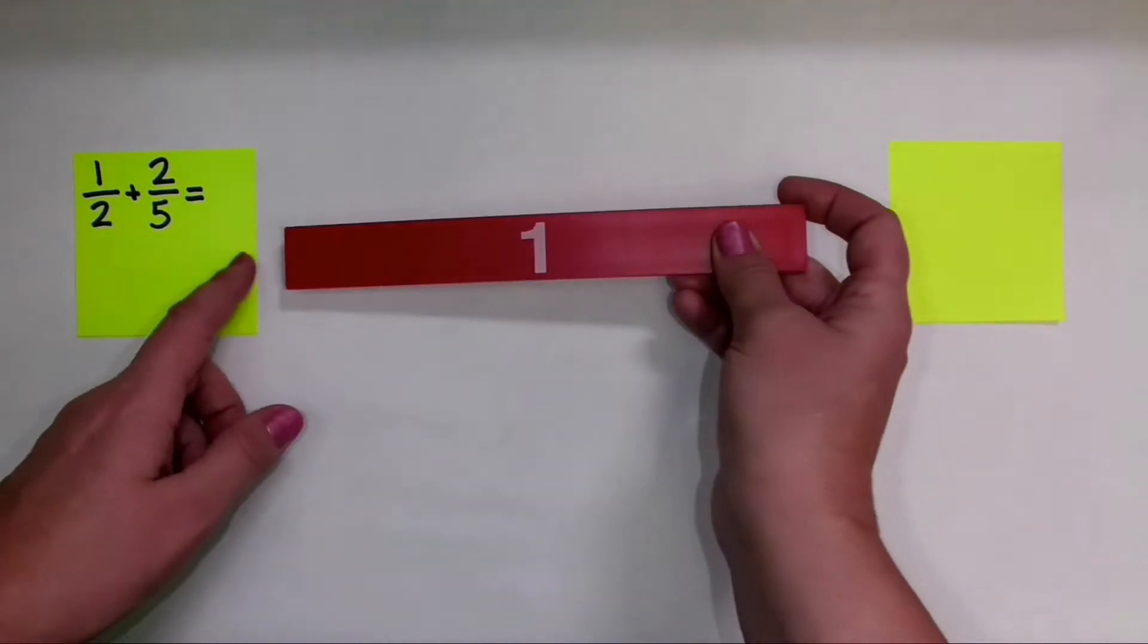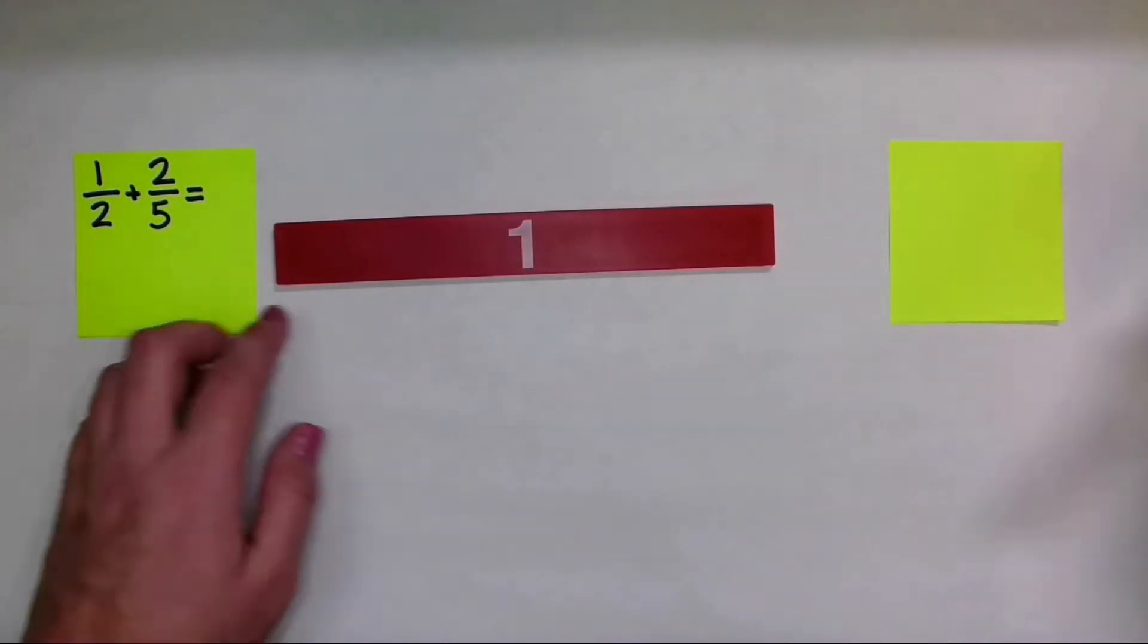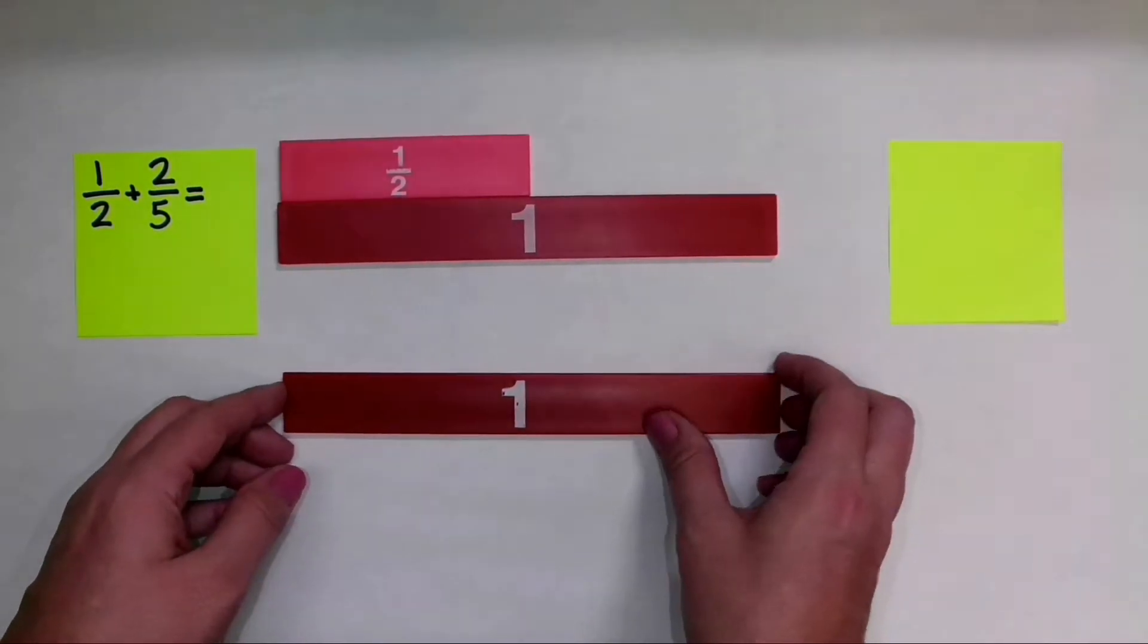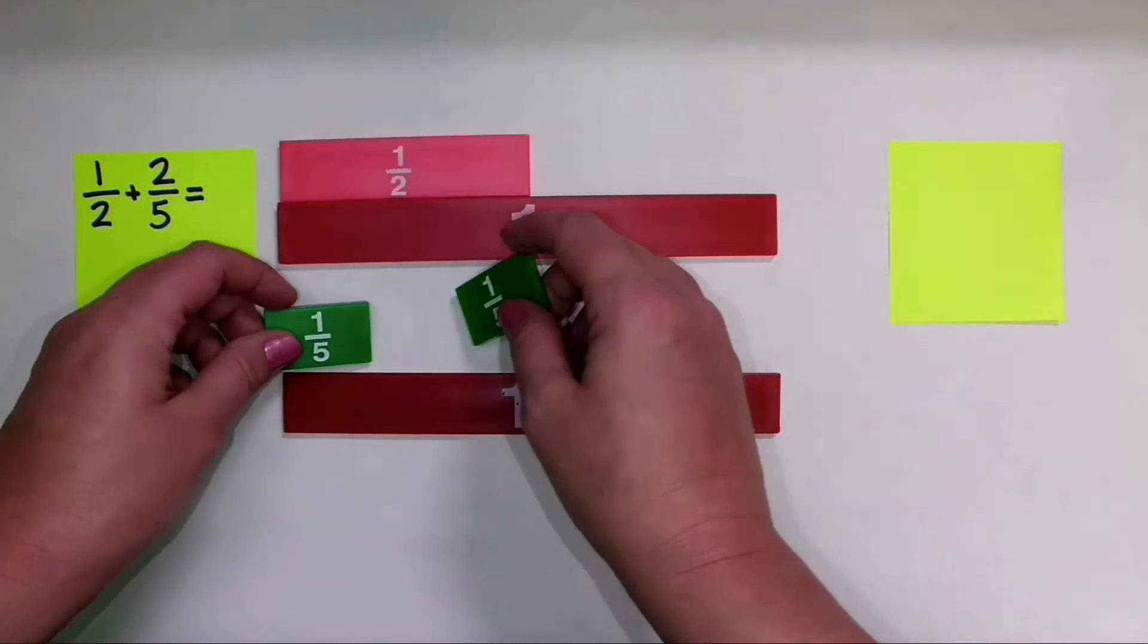I'm going to set these up as two different addends because that's what they are. So I'm going to show the fraction 1 half, and I also am going to show the fraction 2 fifths.